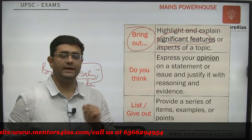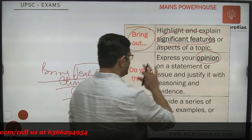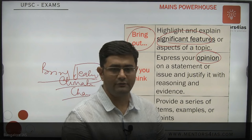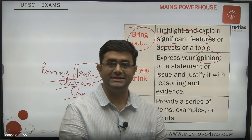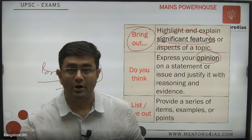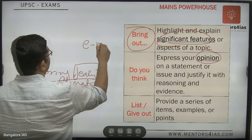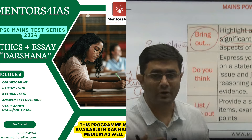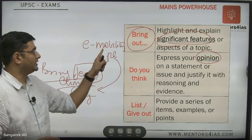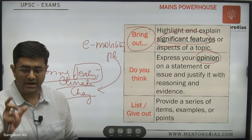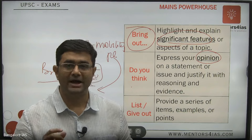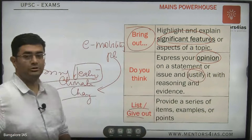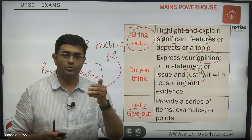The next keyword is 'do you think.' Here the question is asking for your opinion — for example, do you think climate change is reducing with the introduction of a particular policy, or is our e-mobility plan affecting or reducing climate change? You have to give your opinion, but your opinion must be justified by arguments that you make.